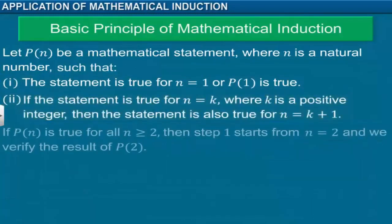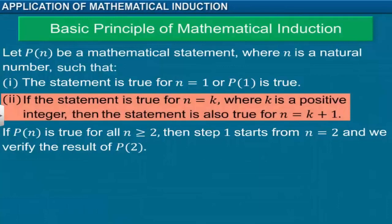If P(n) is true for all n greater than or equal to 2, then the first step starts from n equal to 2, and we verify the result of P(2). Next, if the second principle is true for n equal to k, then it is also true for n equal to k plus 1.